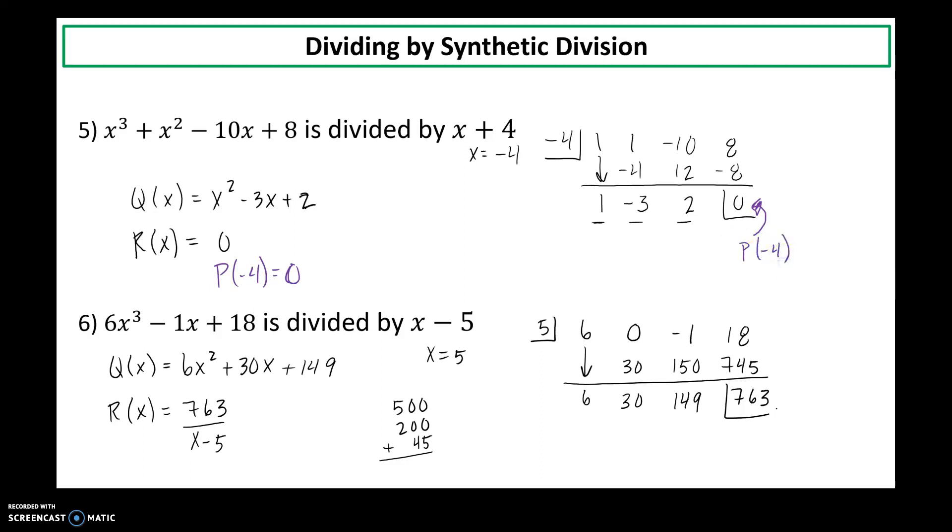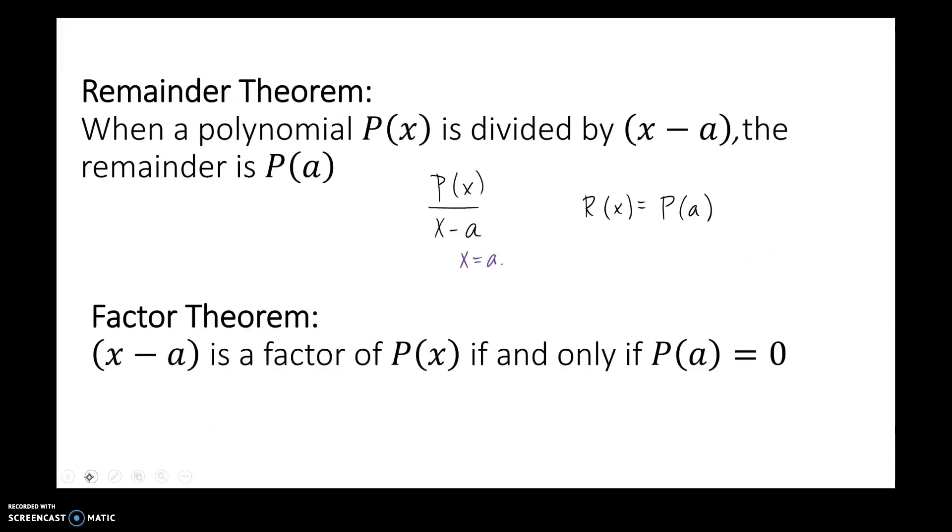So p of negative 4. That was our synthetic substitution. So now here, 763, that would come from substituting 5 into my original function. And that number, it keeps popping up here. Okay? So it's very important. When a polynomial is divided by a linear factor, my remainder just comes from plugging the opposite of that value into the original function.